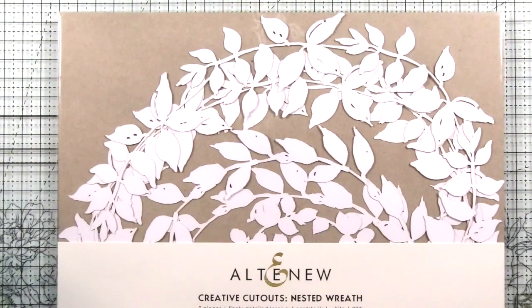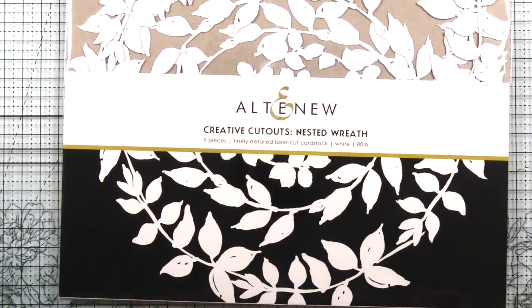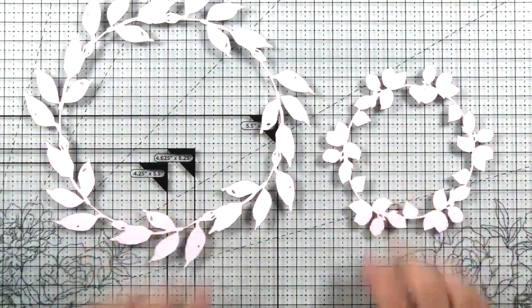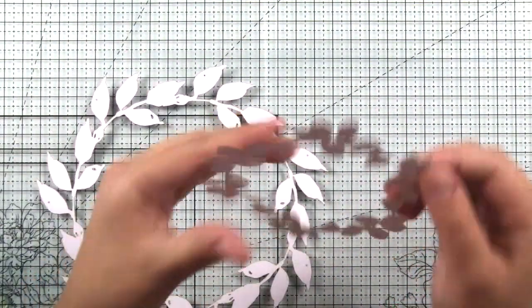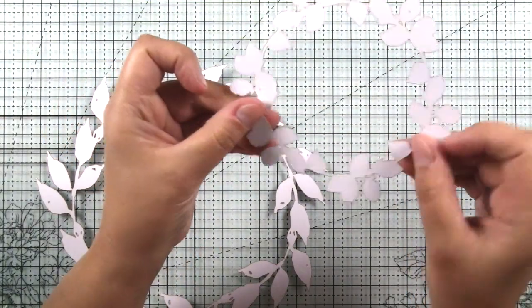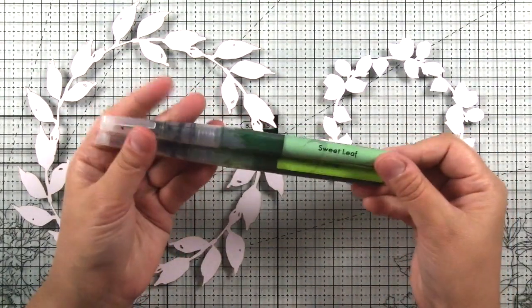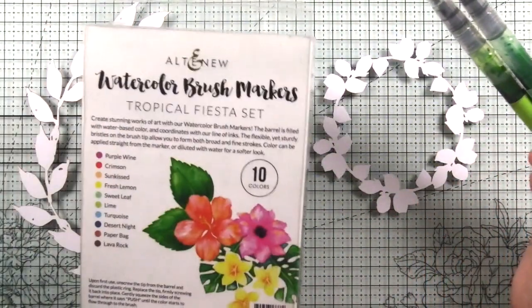Next up we have a brand new line called creative cutouts and these are 80 pound white cardstock. These are laser cut into specific shapes. This one is nested wreaths so you have three different sizes of wreaths in here. This is the medium and the smallest one. I'm showing you how thick they are. They're white on both sides and it almost has like a brownish or craft colored edge around where it was laser cut.